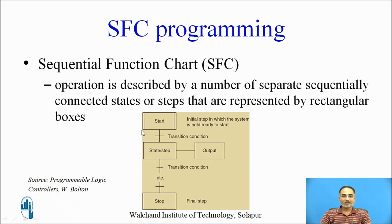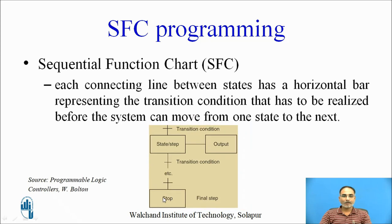Steps are normally represented by rectangular boxes. You have a start step or state, then another step having its own output, then some transition condition in between them, and at the last you have a stop step. Each connecting line between the states has a horizontal bar, and these bars are called transition conditions. These transition conditions must be realized before the system can move from one state to another.